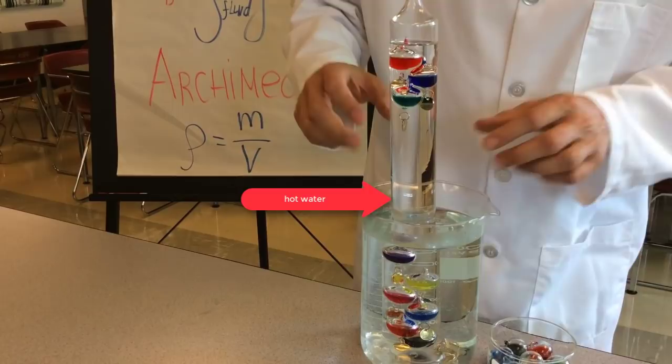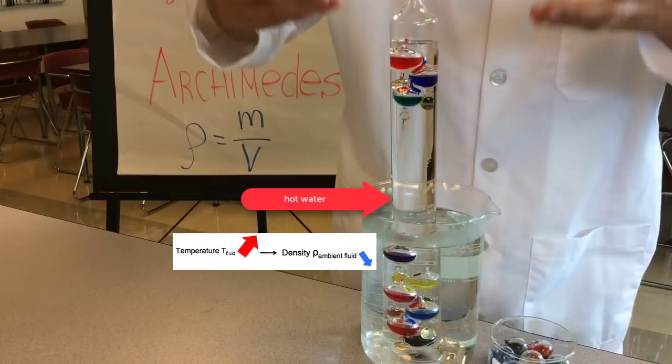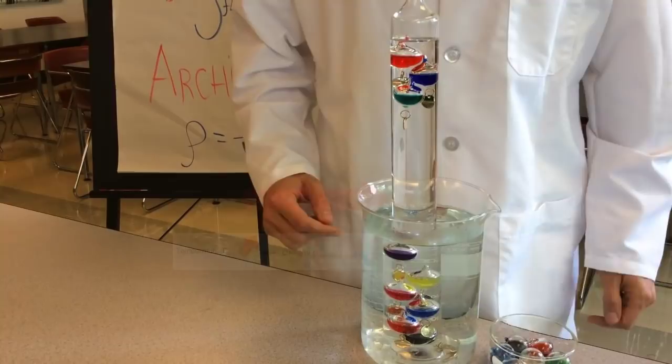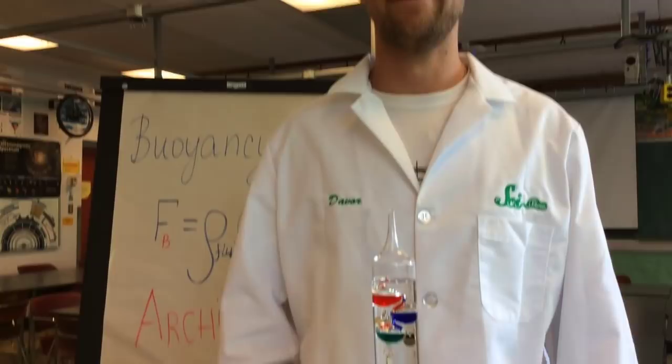And if we increased the temperature of the fluid even more, then its density would decrease even more. And then it would start to go below the density of this ball. And then that ball would start to sink. So that's how a Galilean thermometer works. Thank you.